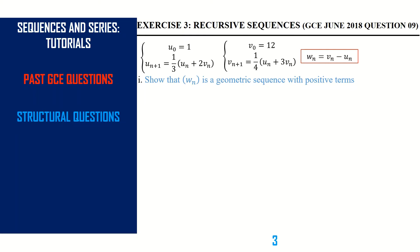We are first going to show that it is geometric, and then show that it is positive, and then conclude. In the previous videos — Part 1 and Part 2 — we said that to show that the sequence is geometric, we just need to show that the ratio between the (n+1) term and the n term is equal to a constant. This constant is called the common ratio.